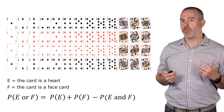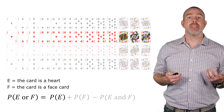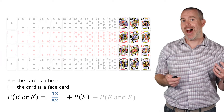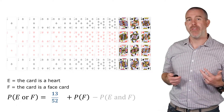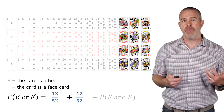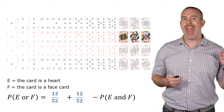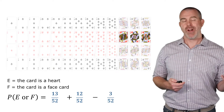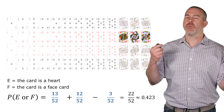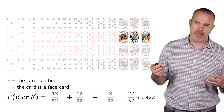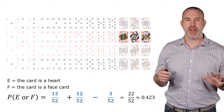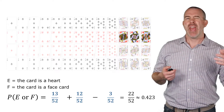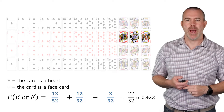The probability of E is 13 hearts, so 13 out of 52. The probability of F is 12 face cards, so 12 out of 52. The probability of E and F — hearts that are also face cards — there are three of them, so we subtract 3 out of 52. We get the same answer: 22 out of 52, or 0.423. The point is that when adding probabilities, you must remove the overlap because you might have counted it twice.